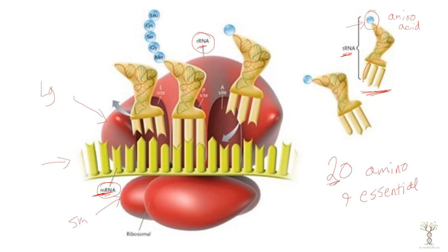There's an important sequence on the transfer RNA called an anti-codon. The anti-codon is three nucleotides that are complementary to the codons. The messenger RNA carries a codon sequence — every three nucleotides is a codon — so the transfer RNA binds to specific codon sequences in the messenger RNA, bringing the correct amino acid to form the amino acid sequence.